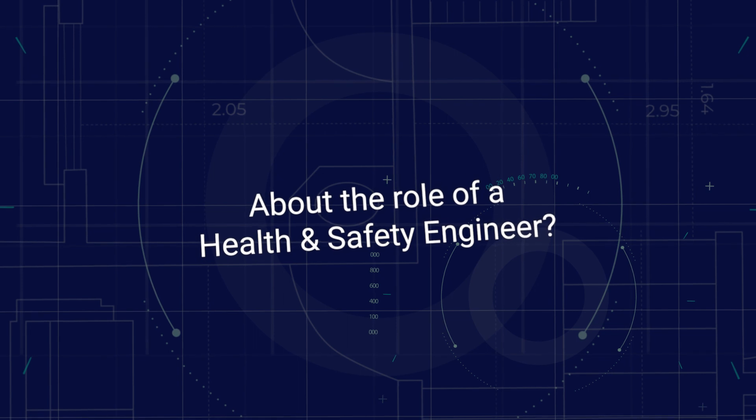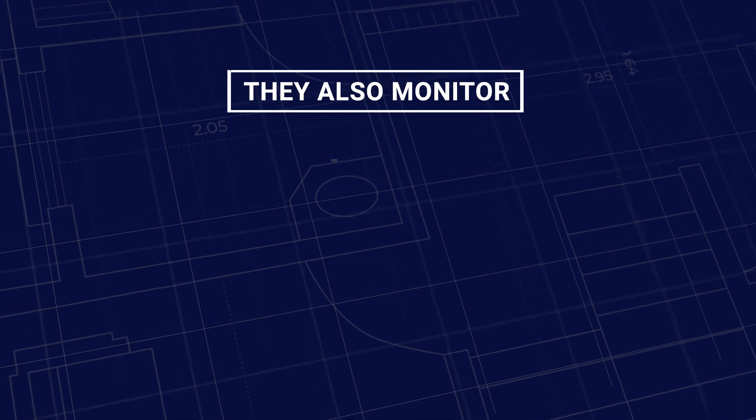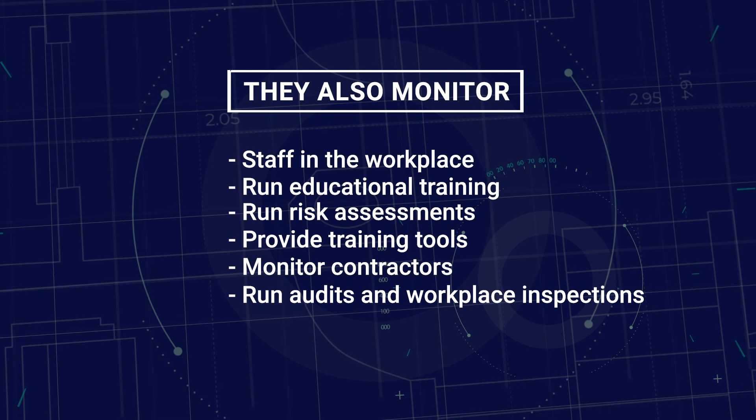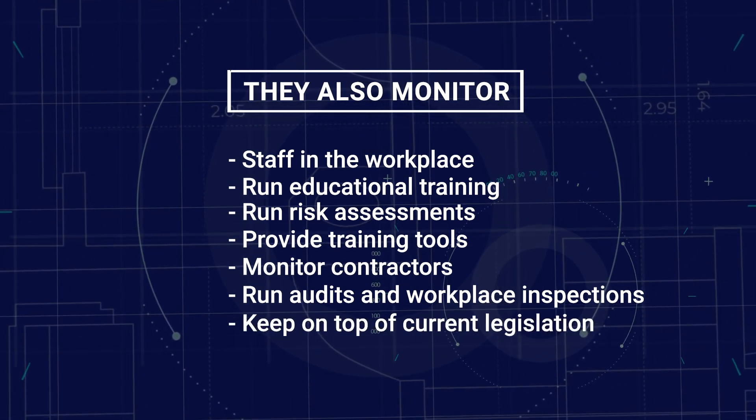Next, let's see about the health and safety engineer. The job of a health and safety engineer is to make sure that working environments comply with legislation. Every workplace and sector must adhere to a certain level of health and safety. In areas such as construction, if workers are not wearing the correct hard hat and clothing, the health and safety officer has to sort it out and ensure it doesn't happen again. Their responsibilities include monitoring staff in the workplace, running educational training, conducting risk assessments, providing training tools, monitoring contractors, running audits and workplace inspections, and keeping on top of current legislation. The role is vital — especially in high-risk sectors such as construction and engineering — ensuring accidents are prevented from ever happening.